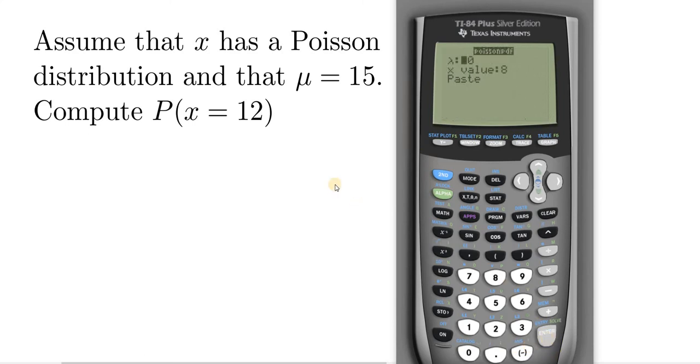Let's go ahead and hit enter. So lambda is the same thing as mu. That's going to be the mean, so it's 15. Our x value in this case is 12. That comes from here.